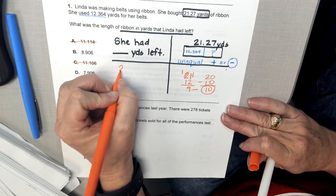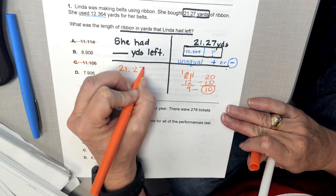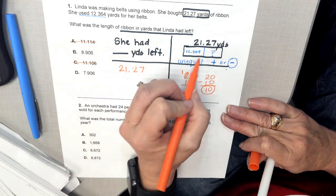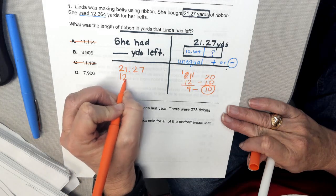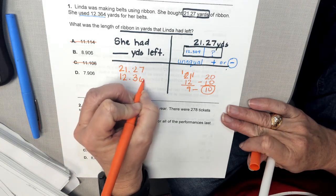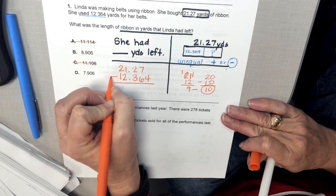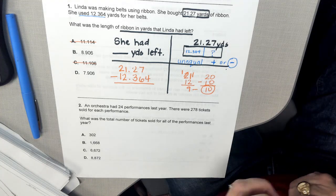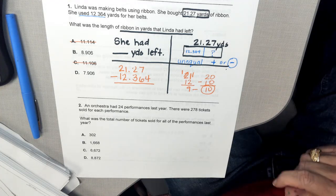When I set it up, 21 and 27 hundredths, I'm going to line up my decimals and I'm going to solve. Your job right now is to solve for the answer and check in with Mrs. Barlow.